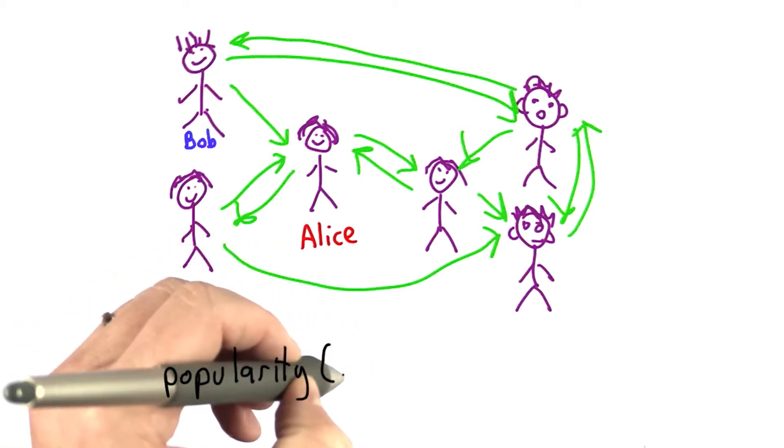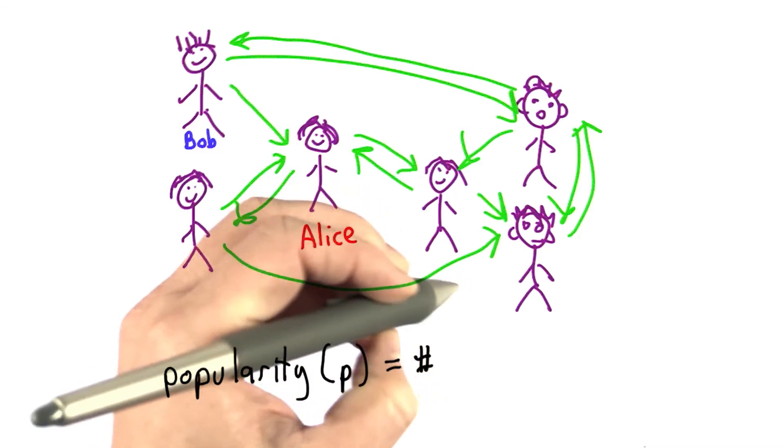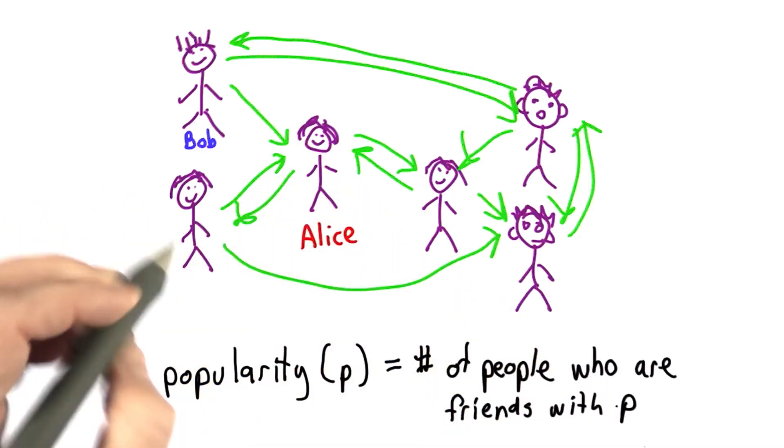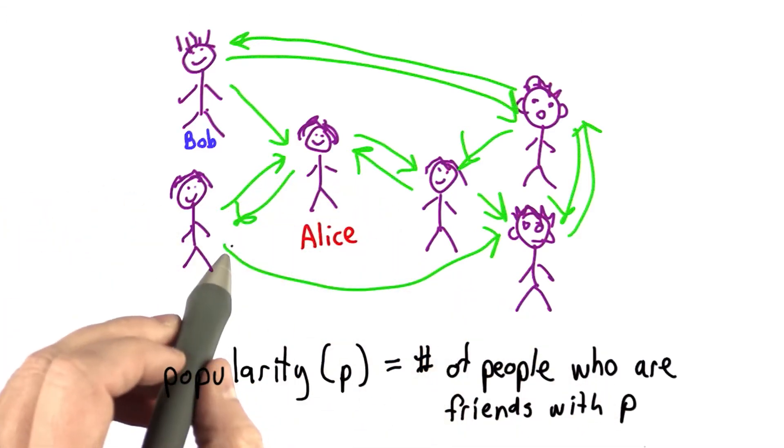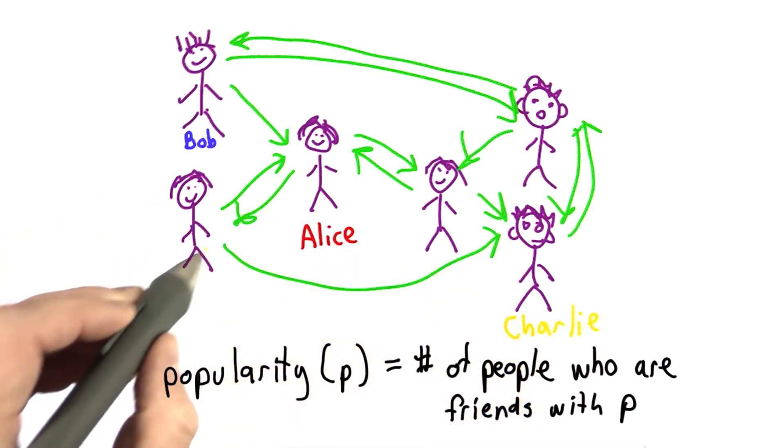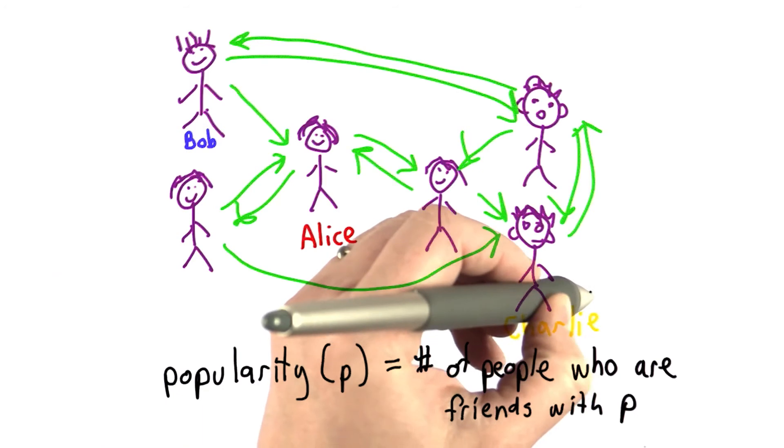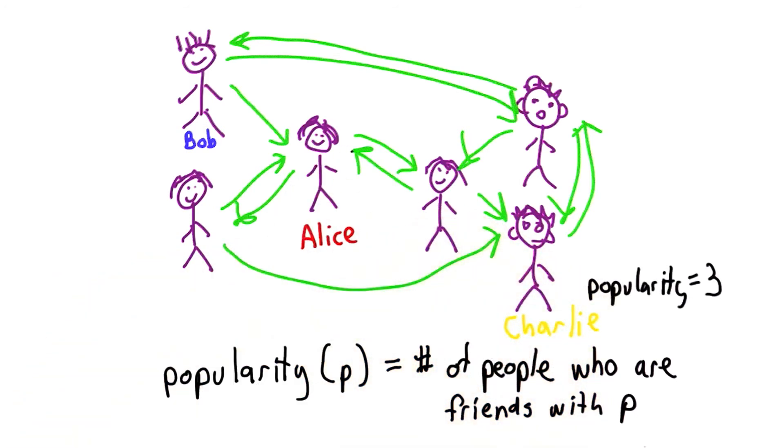So we can define popularity of a person is the number of people who are friends with P. This means the number of links from someone else to that person is their popularity score. So here is Charlie. So there are one, two, three links into Charlie. So Charlie's popularity score would be three. Alice also has three links, so her popularity score would also be three.